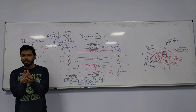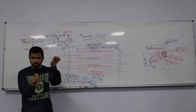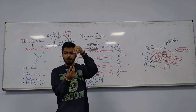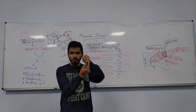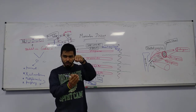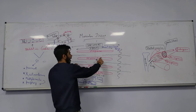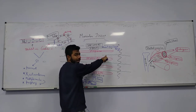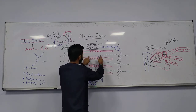On the actin we have troponin and tropomyosin. Troponin has a site for calcium ions. From the sarcoplasmic endoplasmic reticulum there will be release of calcium ions; these calcium ions will bind to the troponin's calcium site, tropomyosin will fall apart, and then there will be cross bridging.